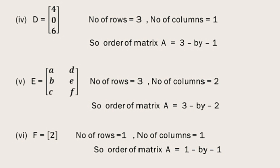Next is E, and in E there are 3 rows and 2 columns, so its order will be 3 by 2. F has only one element, which means one row and one column, so its order will be 1 by 1.